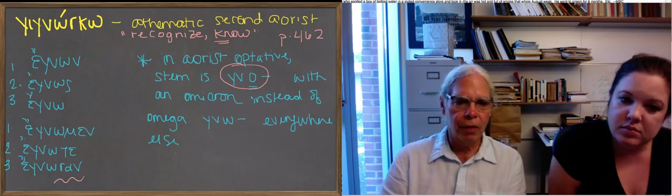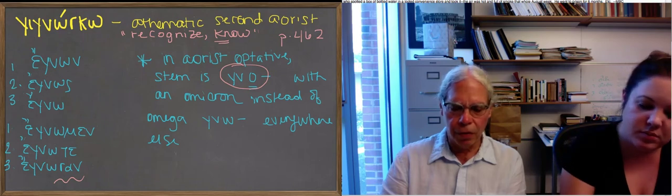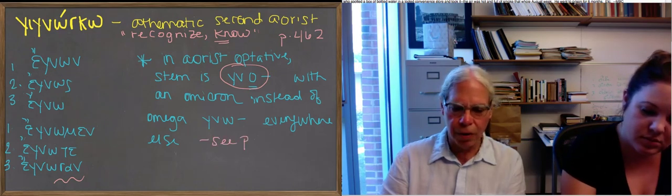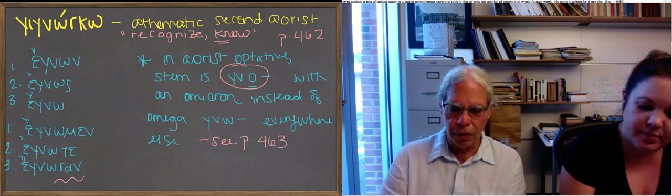So you have gnoie and gnoies, gnoie. The subjunctive gives you, because you've got omicrons in the stem, you've got omegas throughout. So it's gno, gno, gnos, gno,